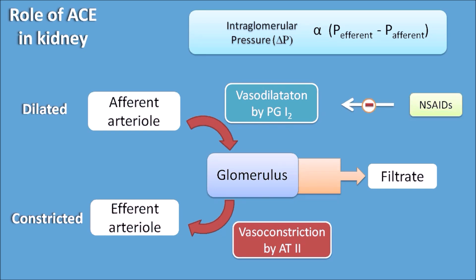NSAIDs inhibit the synthesis of prostaglandins, thereby inhibiting the vasodilatation produced by prostaglandin I2. Similarly, ACE inhibitors and ARBs (angiotensin receptor blockers) inhibit the synthesis and action of angiotensin II, thereby inhibiting vasoconstriction of the efferent arterioles. In this way, all three categories of drugs — NSAIDs, ACE inhibitors, and ARBs — can decrease the glomerular filtration rate on long-term use and precipitate renal failure.